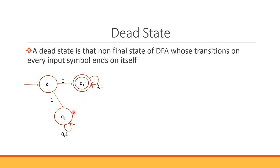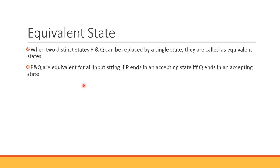Let's remove the dead state. We have to remove the DFA character. We have to remove the unreachable state. In DFA minimization, we will remove the unreachable state first, then we will remove the dead state.